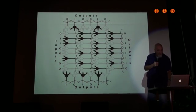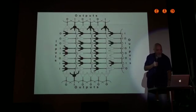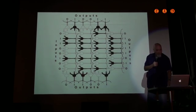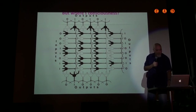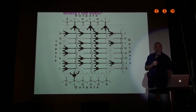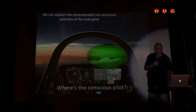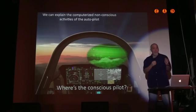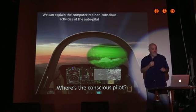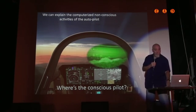So if we have a bunch of neurons and they fire with inputs and outputs, this is pretty much the standard dogma in neuroscience, we get information processing, but where's consciousness? Where's the bing? Where's the synchrony in this? In other words, we can explain the computerized non-conscious activities of the autopilot, but where's the conscious pilot?